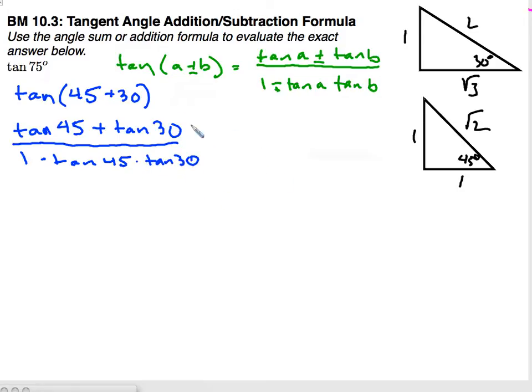Now to evaluate those, I have my special triangles over here. I want the tangent of 45, that's going to be 1. So I have 1 plus tangent of 30 is opposite over adjacent which is 1 over square root of 3 or square root of 3 over 3.